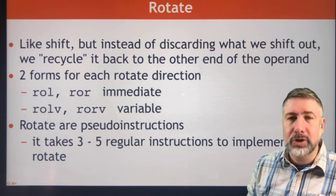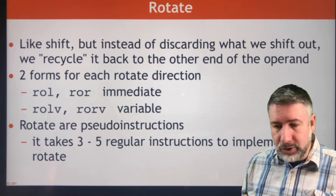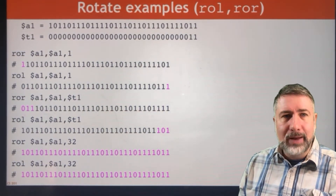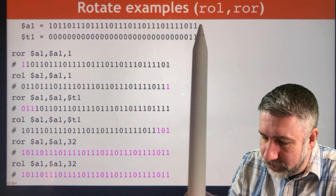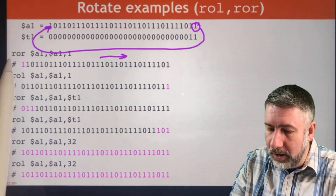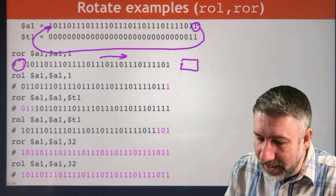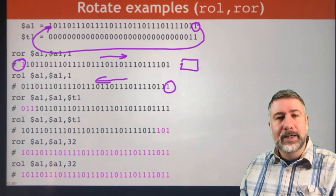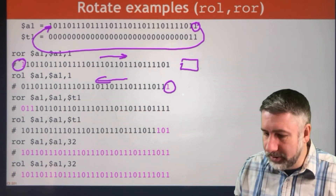These are pseudo instructions, so we're going to look at how they're actually implemented. They're implemented with shifts, and you might already have an idea of how you would do this. First, here are some examples with registers a1 and t1. Rotating a1 to the right by one: we move it to the right and take the last bit and put it all the way at the top. Rotate to the left is the same idea in the other direction — instead of wiping out results we rotate them to the other side.